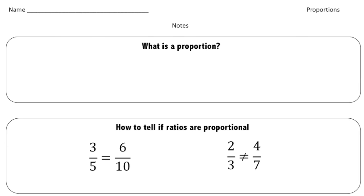So what exactly is a proportion? Well here's the definition. A proportion is a name that we give to state that two ratios are equal.